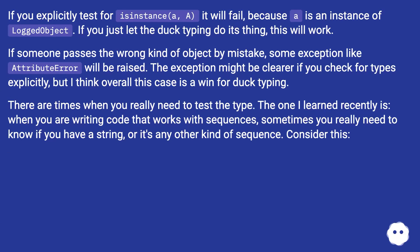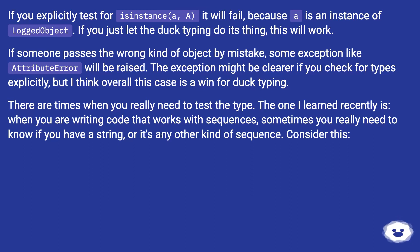If you explicitly test isinstance(a, A), it will fail because 'a' is an instance of LoggedObject. If you just let the duck typing do its thing, this will work. If someone passes the wrong kind of object by mistake, some exception like AttributeError will be raised. The exception might be clearer if you check for types explicitly, but overall this case is a win for duck typing.